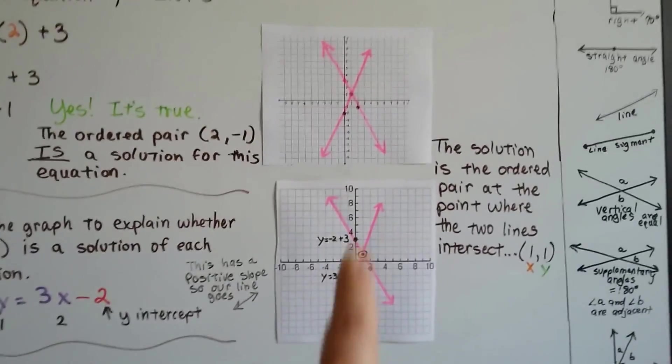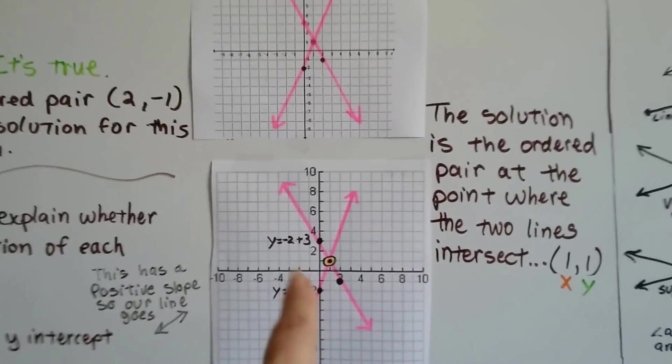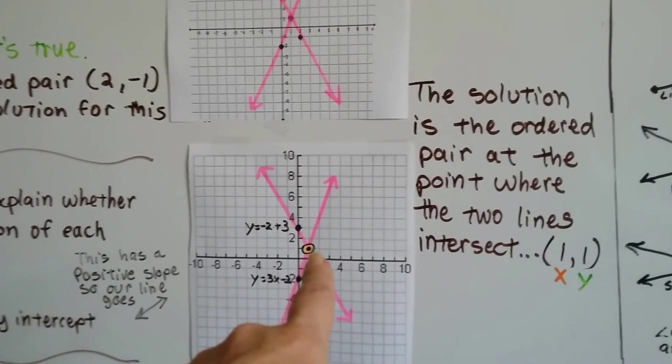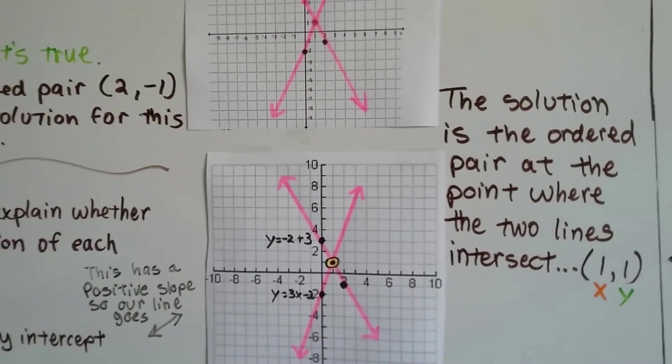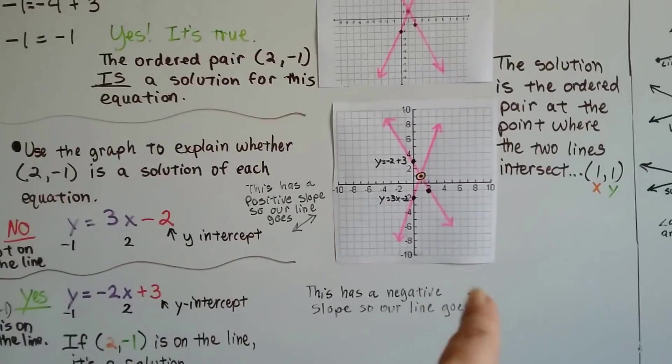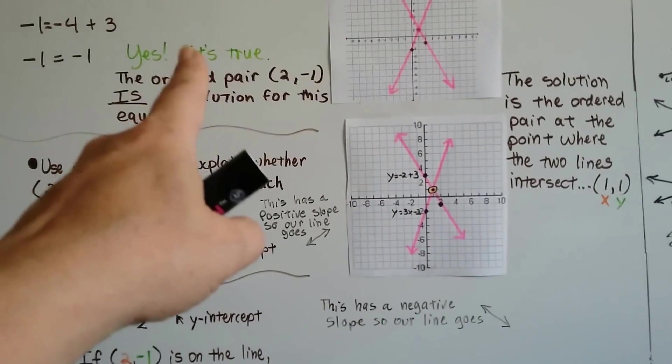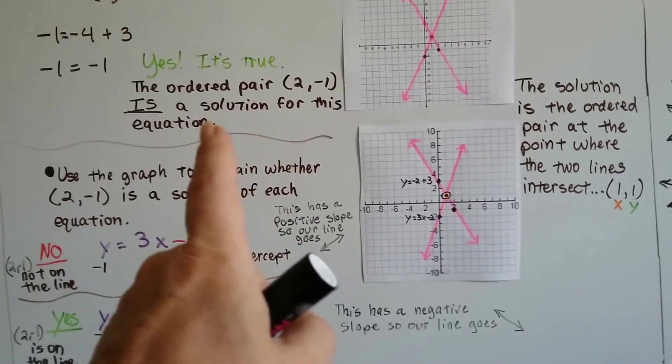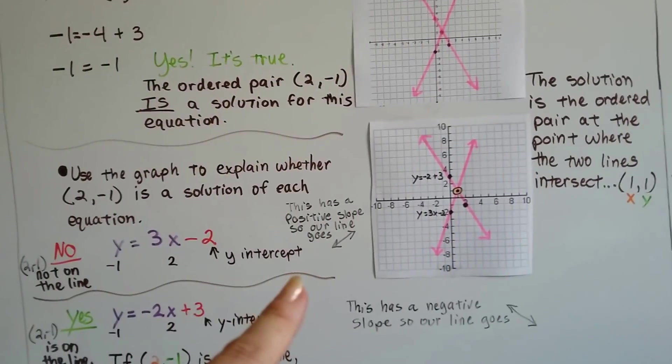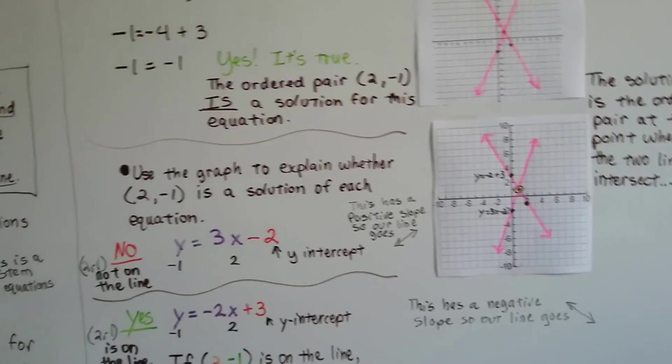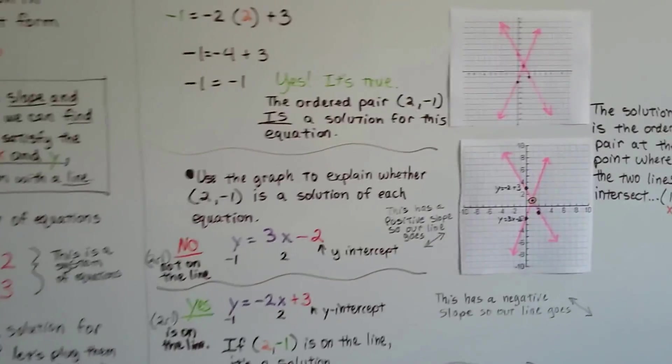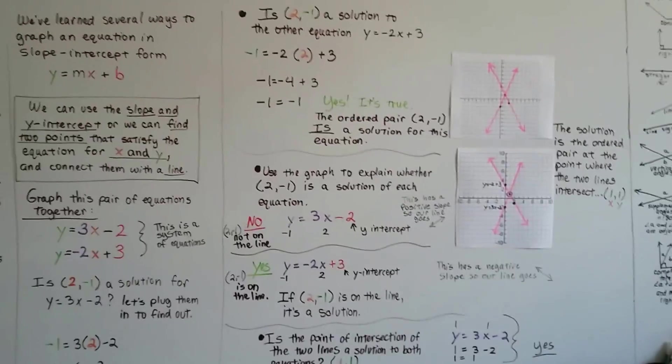So the solution is the ordered pair at where the points intersected at 1, 1. It helps to know that a negative slope heads up this way or it falls to the right and the positive slope rises to the right. That was our saying, right? Positive rises to the right and negative falls to the right.